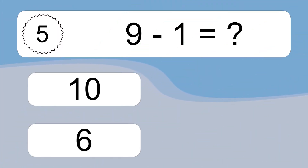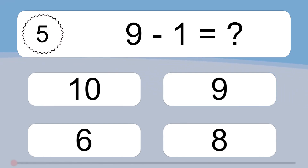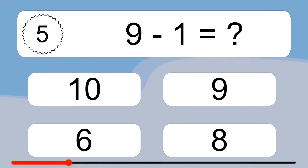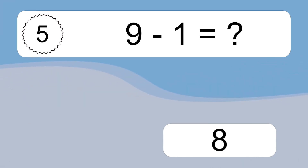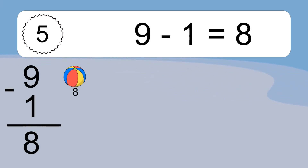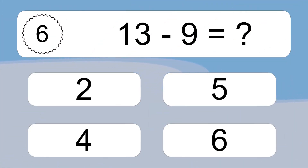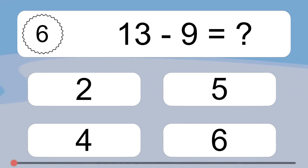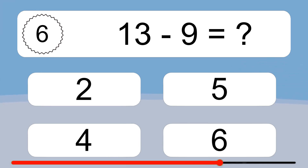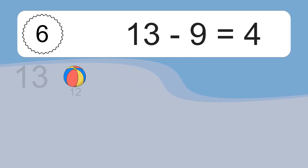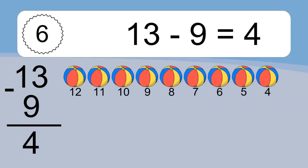9 minus 1 equals what? 9 minus 1 equals 8. Let's count it: 8. 13 minus 9 equals what? 13 minus 9 equals 4. Let's count it: 12, 11, 10, 9, 8, 7, 6, 5, 4.